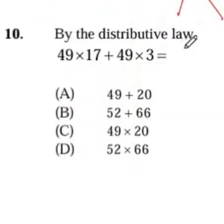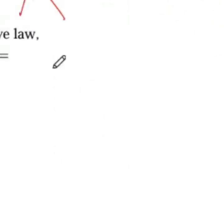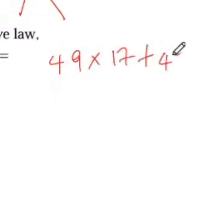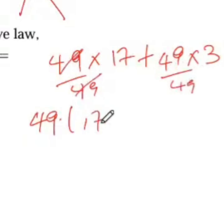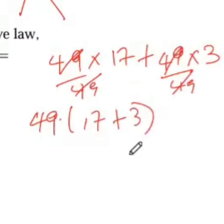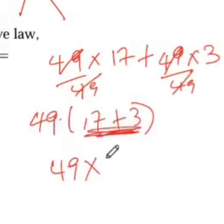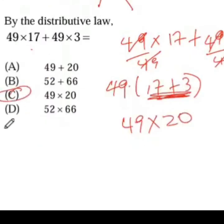Number 10: by the distributive law, 49 times 17 plus 49 times 3 is what? If you look at this from an algebraic perspective, what is the common factor? The common factor is 49. So if I take my 49 and divide it into this term and then divide it into that, I'm going to have 17 in my bracket and plus 3. So when I factorize out the 49, I'm getting 49 times 20 because 17 plus 3 is 20. My answer is C at number 10.